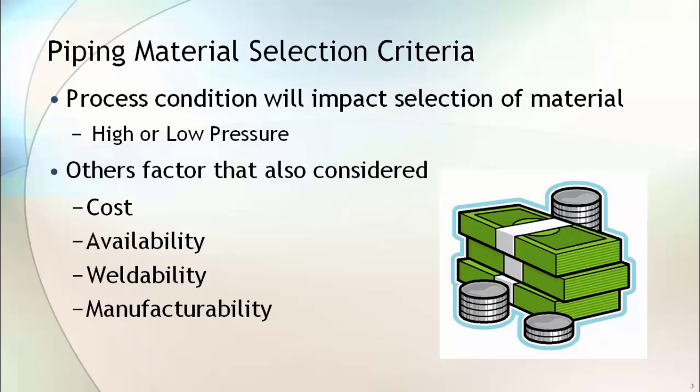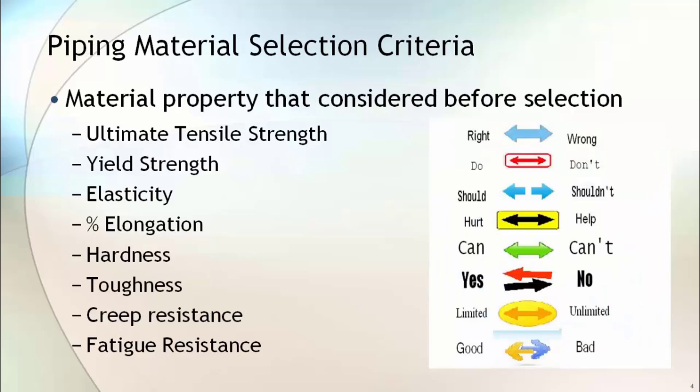Other non-process factors also considered during selection of material are cost of material, availability, weldability, and manufacturability. Similar to process fluid properties, material properties considered before selection are ultimate tensile strength, yield strength, elasticity, percentage elongation, hardness, toughness, creep resistance, and fatigue resistance.